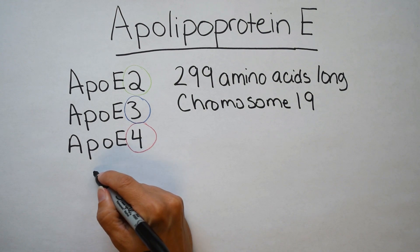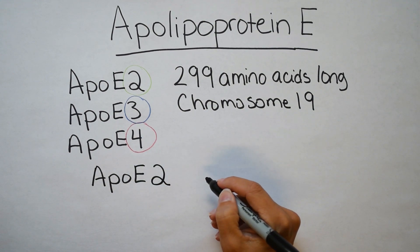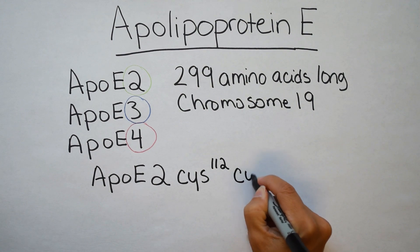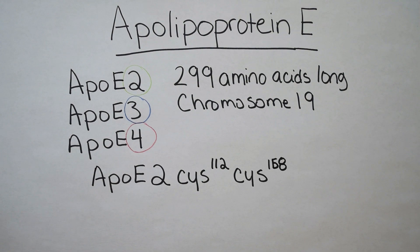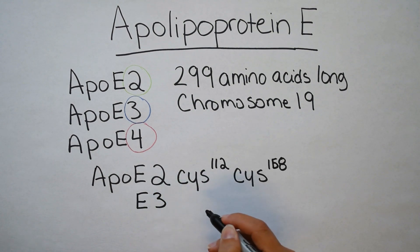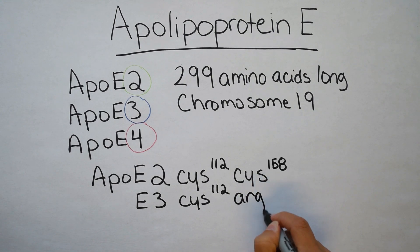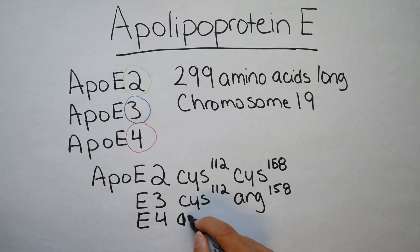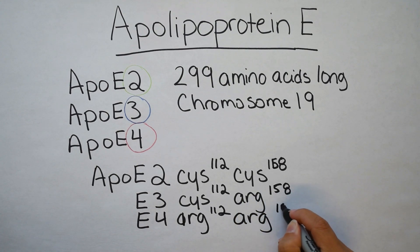APOE4 is a risk factor for Alzheimer's disease. There are two parts to these proteins: the N-terminal receptor-binding domain and the C-terminal lipid-binding domain. For APOE2, the two important positions are amino acid 112 and amino acid 158 — both are cysteine molecules and bind well to each other. APOE3 has cysteine at position 112 and arginine at position 158. APOE4 has arginine at both positions, which makes it behave quite differently.